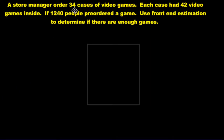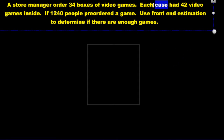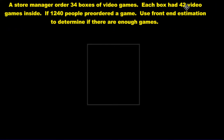Here's the third question. A store manager ordered 34 cases of video games. Each case had 42 video games inside. So he's got 34 boxes, and inside each box there are 42 video games. If 1,240 people pre-ordered a game — meaning before the games arrived, this many people went to the store to pre-order so they'd be first — use front end estimation to determine if there are enough games available.